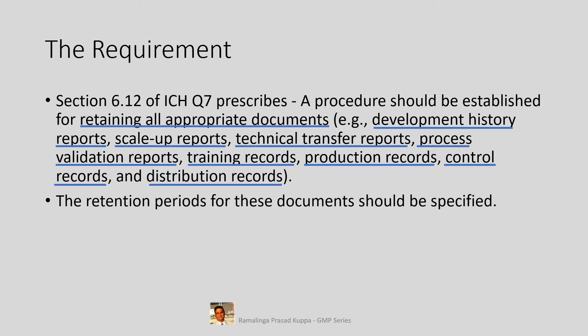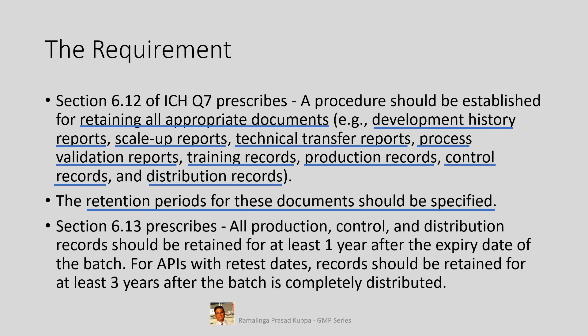The retention periods for these documents should be specified. It is necessary to list out clearly the various types of all available documents related to the product, specifying the retention period for each type. Section 6.13 prescribes that all production, control, and distribution records should be retained for at least one year after the expiry date of the batch.